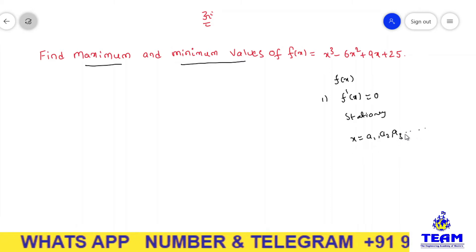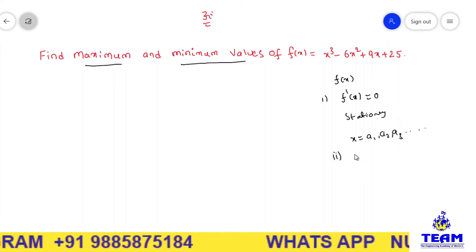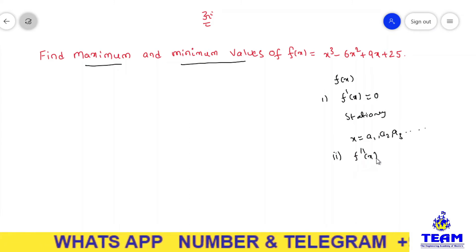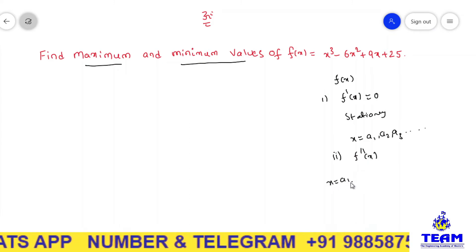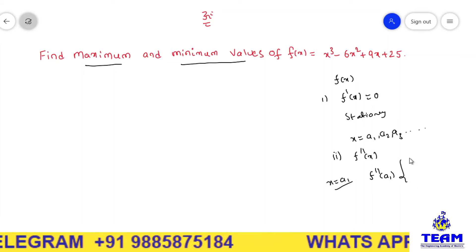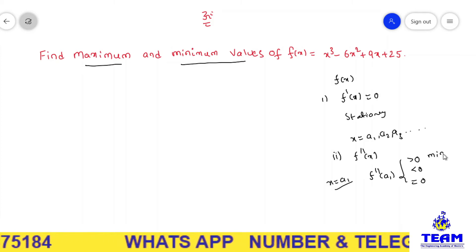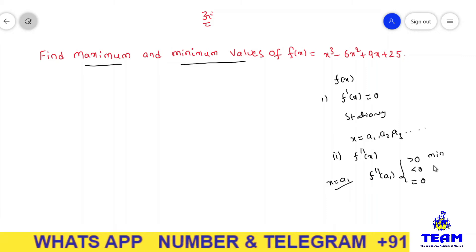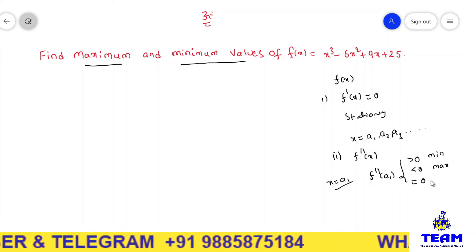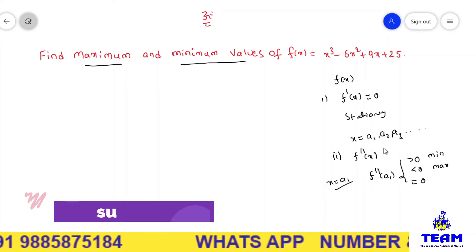After getting the stationary values, we have to discuss the double derivative of f of x sign. Find the double derivative, then evaluate at each stationary point. If f double dash of a1 is greater than 0, the function is minimum at x equal to a1. If less than 0, the function is maximum. If equal to 0, further investigation is needed. This is the working rule for a single valued function.